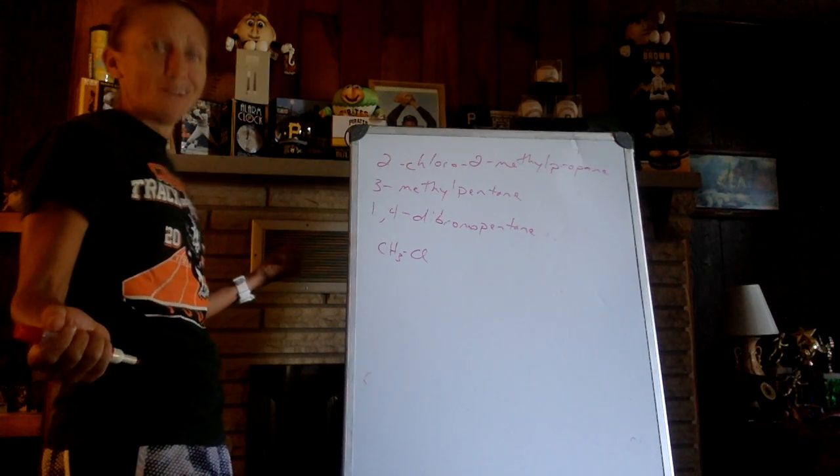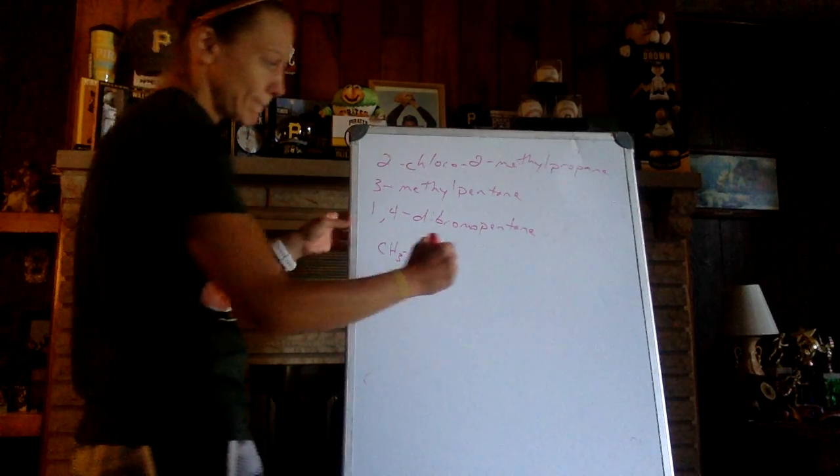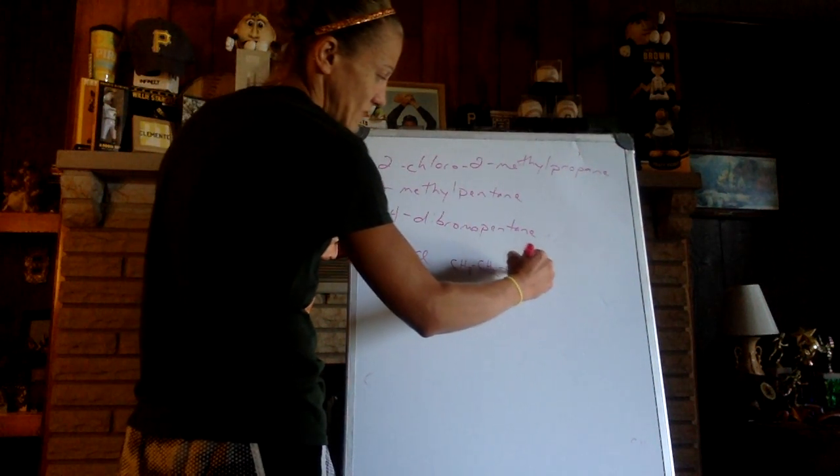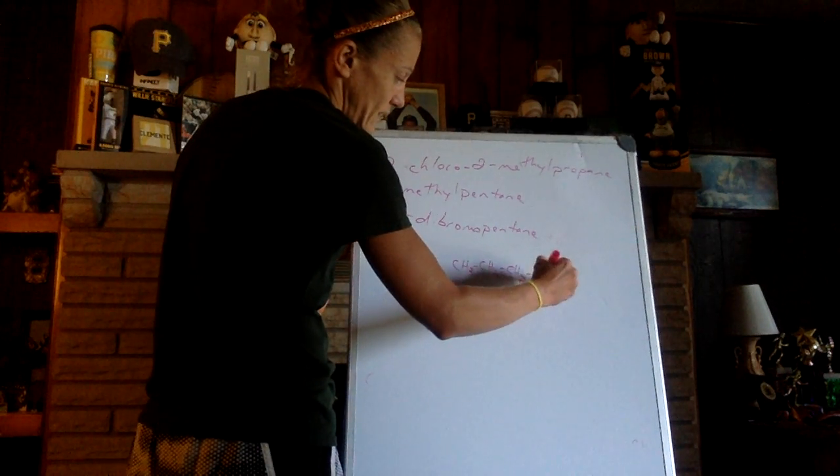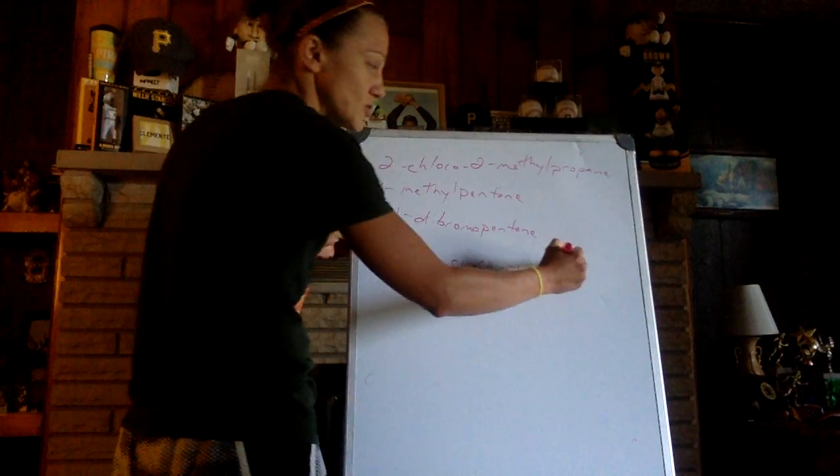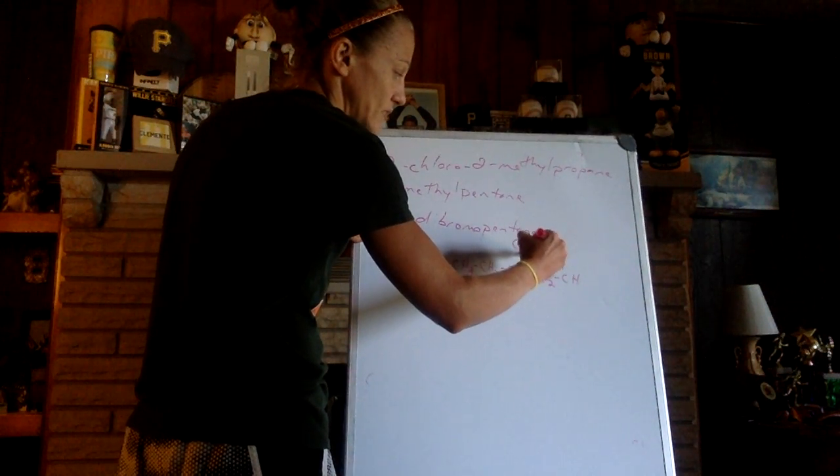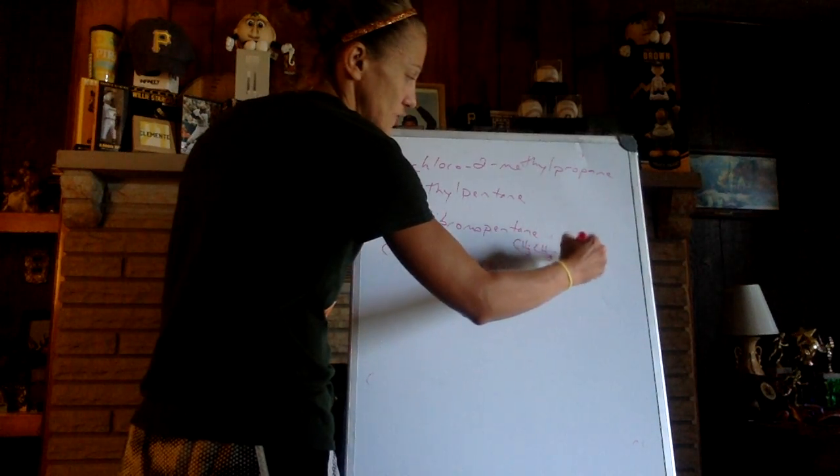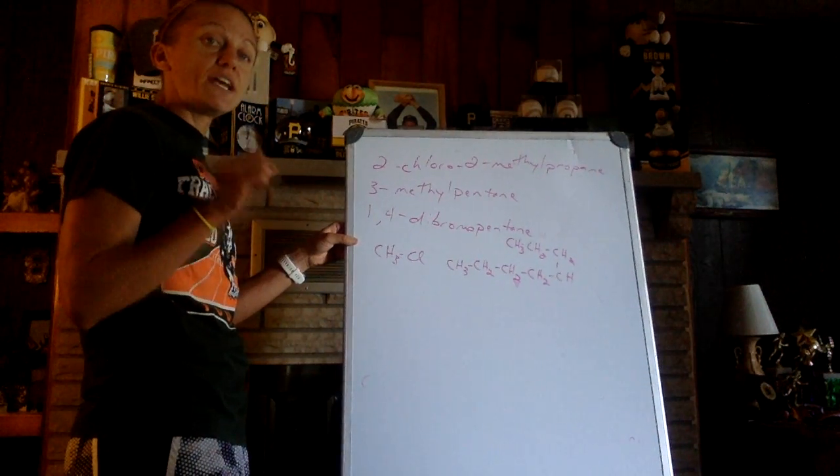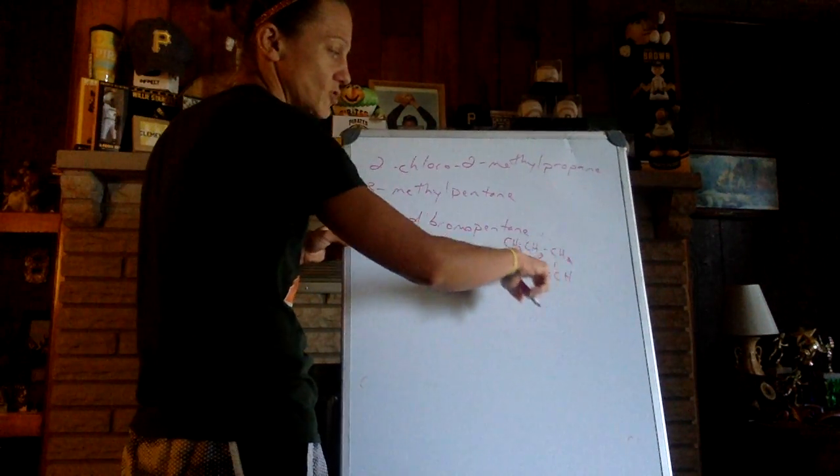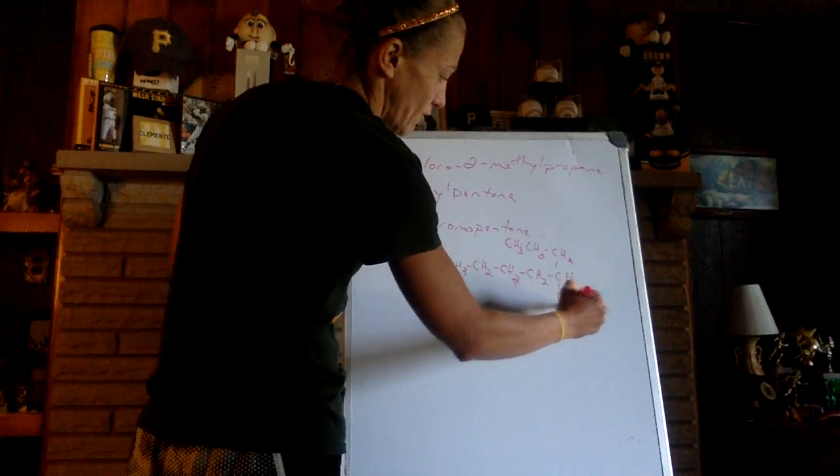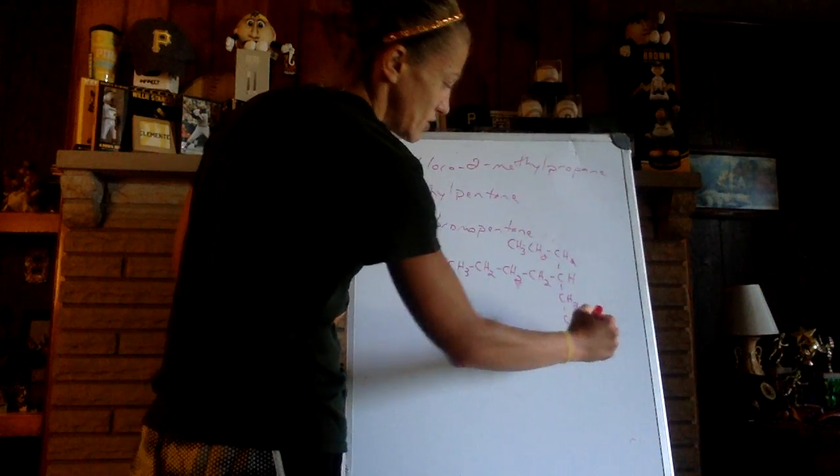5-propylnonane? Really? Okay. CH3, there's my first carbon. CH2 is my second carbon. CH2 is my third carbon. CH2 is my fourth carbon. On my fifth carbon, I'm only going to have CH to make room for CH3-CH2-CH2. If you're attaching a carbon-containing side chain, make sure your CH2 is where you're attached, and your CH3 is your other end.